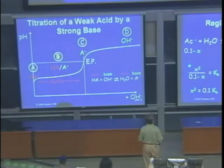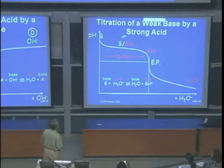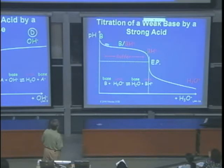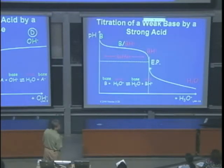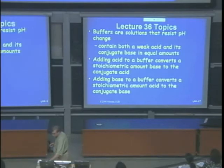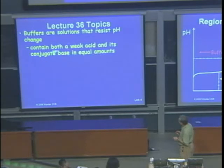There is also a buffer region in the titration curve. For a weak acid titrated with strong base, the equivalence point is above pH 7. For a weak base titrated with strong acid, the equivalence point is below pH 7. Buffers are solutions that resist pH change; they contain both a weak acid and its conjugate base in roughly equal amounts.